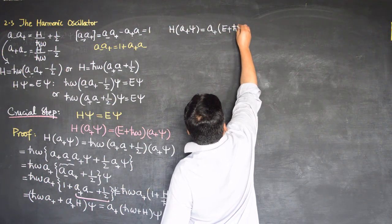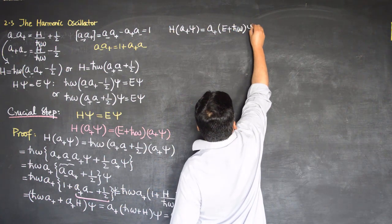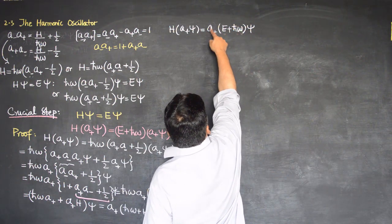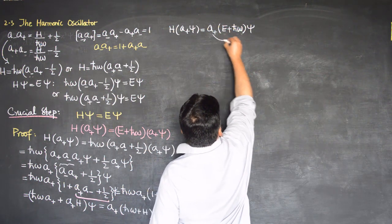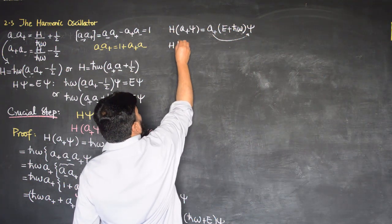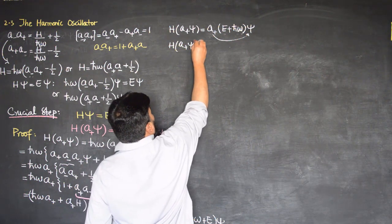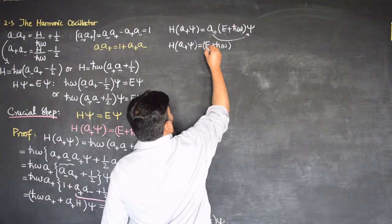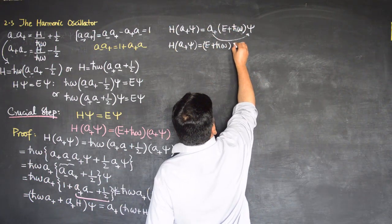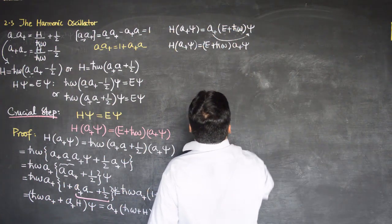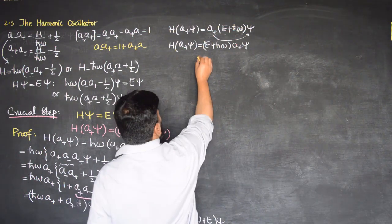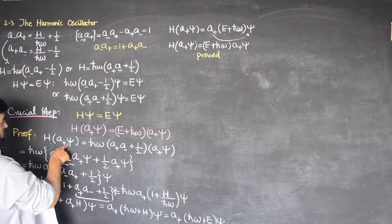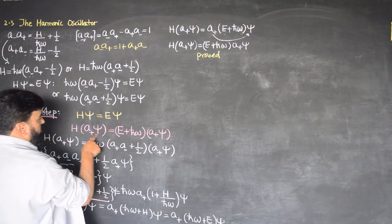Both are actually numbers so I can write: H(a+ψ) is equal to a+ times (E + ħω) times ψ. I can write this as a+ħω. Now here E is a number and ħω is a number so we can move them out. So I can write that H on (a+ψ) gives (E + ħω)(a+ψ). We have actually proved that when H operates on a+ψ it gives (E + ħω)(a+ψ). This is the proof.